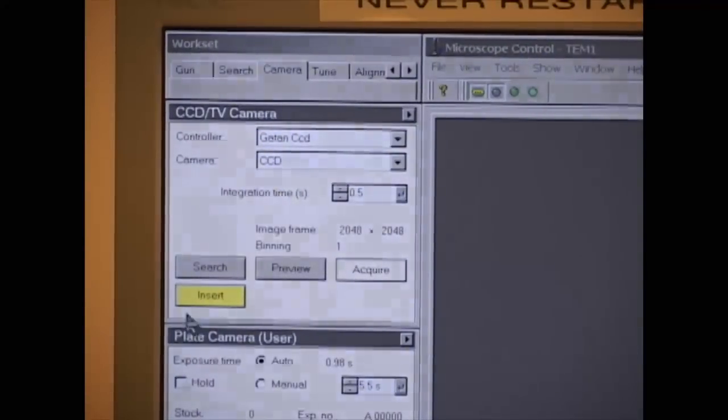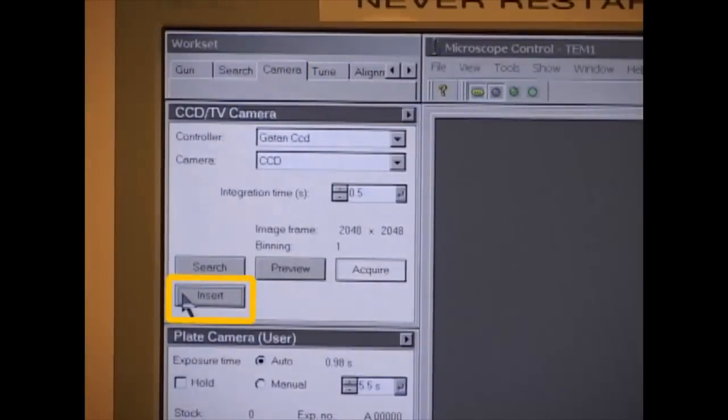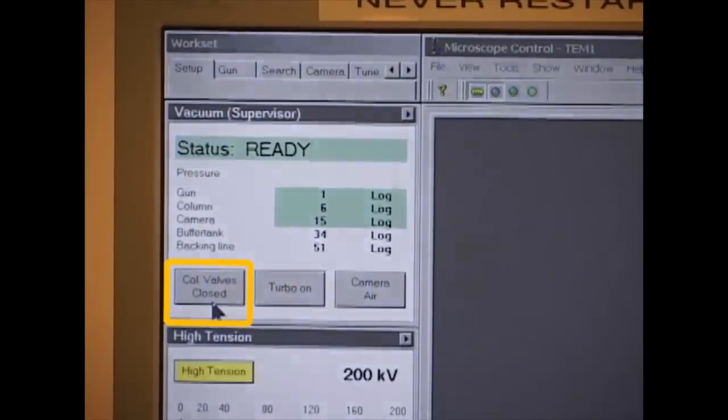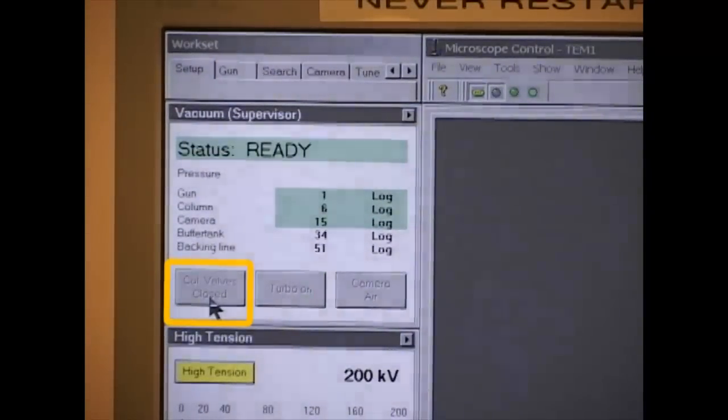go to the Microscope Control, Camera, and click Insert to take the camera out. Then go to Setup. Click Column Valves Closed to close the column valves and stop the beam.